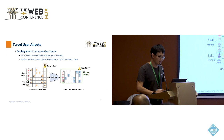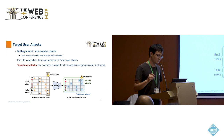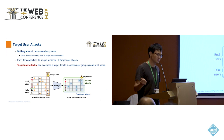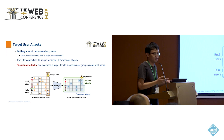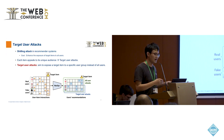In the previous definition, shilling attack means we recommend the target item to all users, promoting exposure to everyone. But we consider another task called target user attack. For some products or micro-videos, not everyone will like them. If we promote to many, many users, maybe only some are interested and will buy or watch. So we waste our attack resources — the fake users we need to inject or build as robot users on the platform.